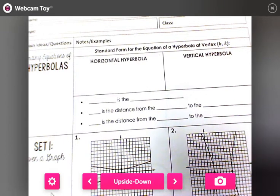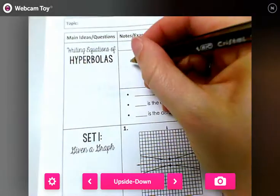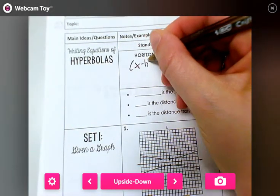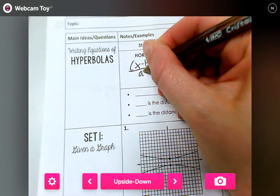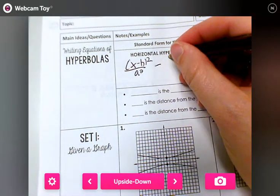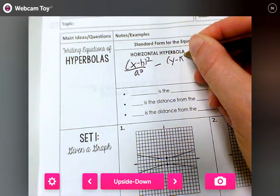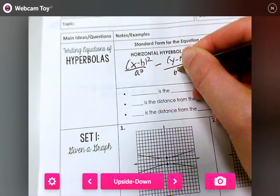Now we're recording. Alright, we're looking at the second day of hyperbolas right here. So let's remember, horizontal hyperbola is (x-h)² over a² minus (y-k)² over b² equals 1.